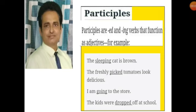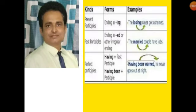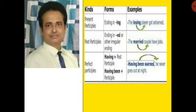Participles are divided into three parts: number one, present participle; number two, past participle; and number three, perfect participle. For present participle: the losing player got ashamed — 'losing' is present participle here. The hunter killed a running lion — 'running' is present participle here. He hit the sleeping dog — 'sleeping' is present participle here.